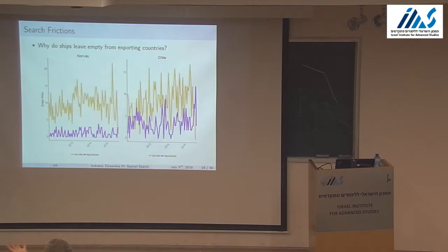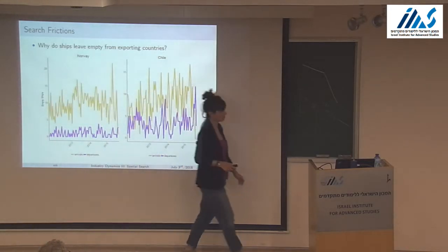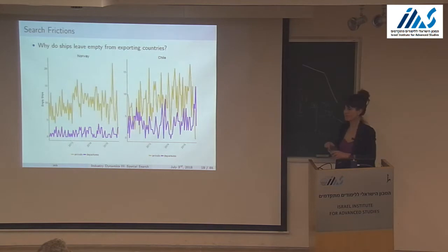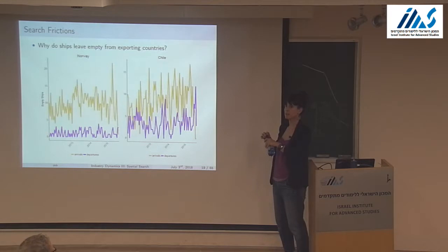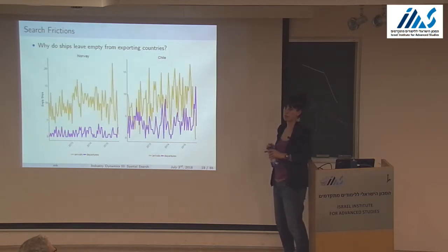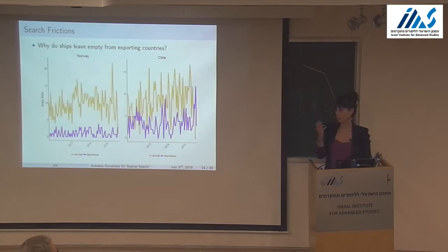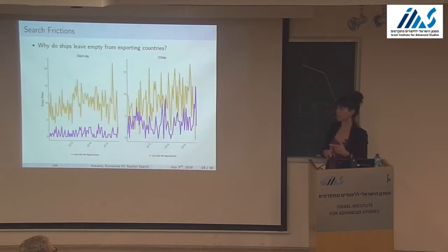Search frictions. We can control for ship type and the same thing happens. What can be inside the frictions? Several stories: information — brokers getting 5,000 emails a day, information gets lost; asymmetric information or long-run relations — I don't know you, I'm not sure I want to contract with you; infrastructure such as port congestion; and regulation — some flags like Israel have restrictions. Information and ports are probably the main stories.